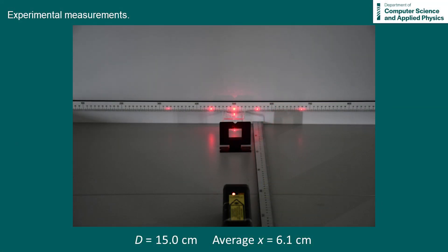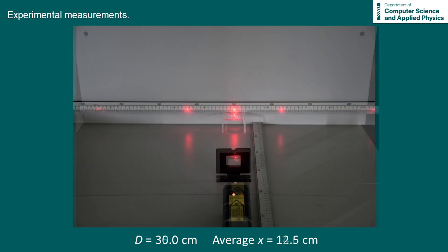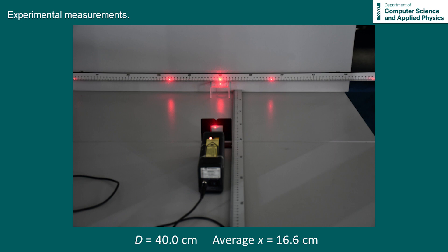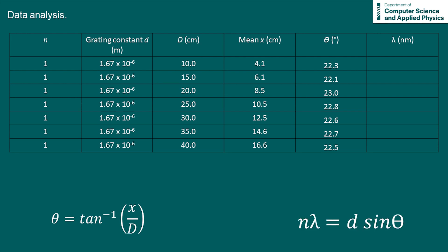Here is our experimental data. Average values of x were calculated for distances ranging from 10 cm to 40 cm in steps of 5 cm. All data was taken for the first order, and the grating constant was the same for each measurement. We used our values of x and d to calculate the corresponding angles theta, and then applied the diffraction grating formula. The average value of lambda was found to be 637.3 nm.